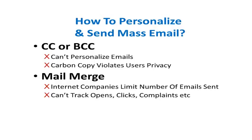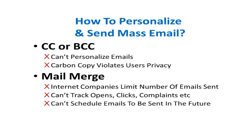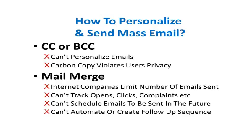You can't schedule emails to be sent out in the future, which is very inconvenient. If it's Friday afternoon and you want to send a marketing email Monday morning, you'd have to physically send it Monday morning — whereas the easier way is to write the email Friday and schedule it to go out first thing Monday. You also can't automate a follow-up sequence. Studies have shown it often takes three to seven interactions with a prospect to turn them into a client, so an automated follow-up system means less things fall through the cracks.